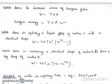Work done in splitting a liquid drop of radius small r into n identical drops. Work done will be 4 pi T r square into n to the power 1 by 3 minus 1.